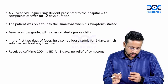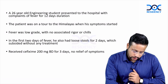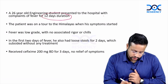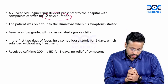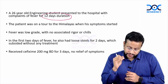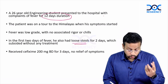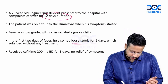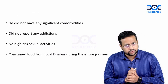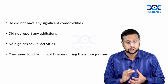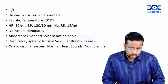Our first case is a 26-year-old engineering student who presented to the hospital with complaints of fever for 12 days duration. The patient was on a trip to the Himalayas when his symptoms started. Fever was low grade with no associated chills or rigors. In the first two days of fever, he also had loose stools for two days which subsided without any treatment. As fever was persisting, he was treated with ofloxacin 200 mg for three days and there was no relief of symptoms. He did not have any significant comorbidities, no addictions, no high-risk sexual contact. The patient has been consuming food from local dhabas during his entire journey.